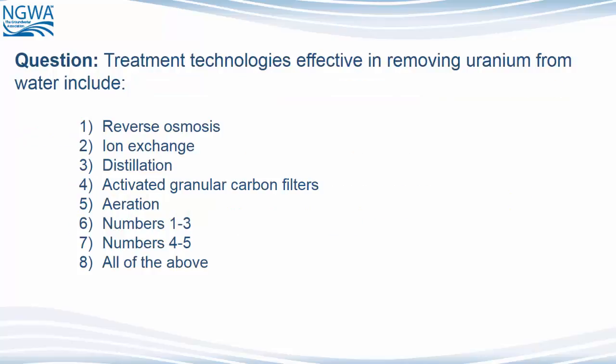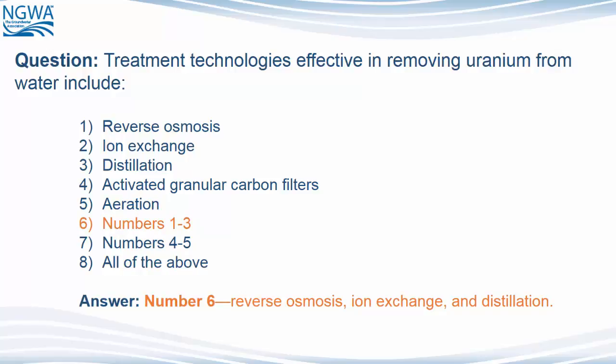Question: Treatment technologies effective in removing uranium from water include: 1. Reverse osmosis. 2. Ion exchange. 3. Distillation. 4. Activated granular carbon filters. 5. Aeration. 6. Numbers 1 through 3. 7. Numbers 4 through 5. 8. All of the above. The answer is number 6 — reverse osmosis, ion exchange, and distillation.